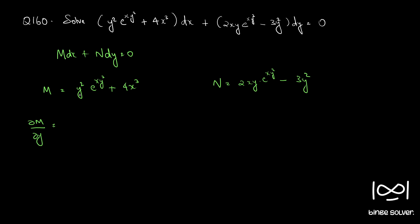x is considered a constant. This is a product term, so applying the product rule: first function into differential of second, which is 2xy into e raised to x y squared. E raised to x y squared differential is 2xy into e raised to x y squared, plus second function e raised to x y squared into differential of first, which is 2y. Simplifying, we get e raised to x y squared into 2xy cubed plus 2y.